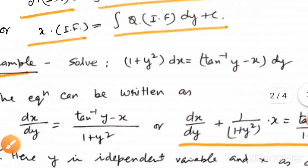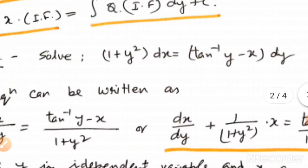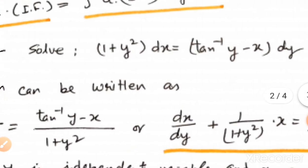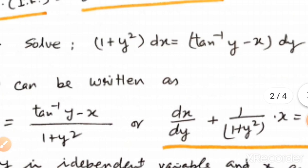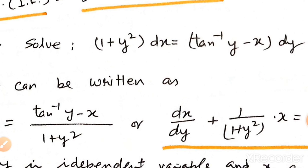Example: 1 plus y square dx equal to tan inverse y minus x dy. This problem is in standard form, we will use the second form.